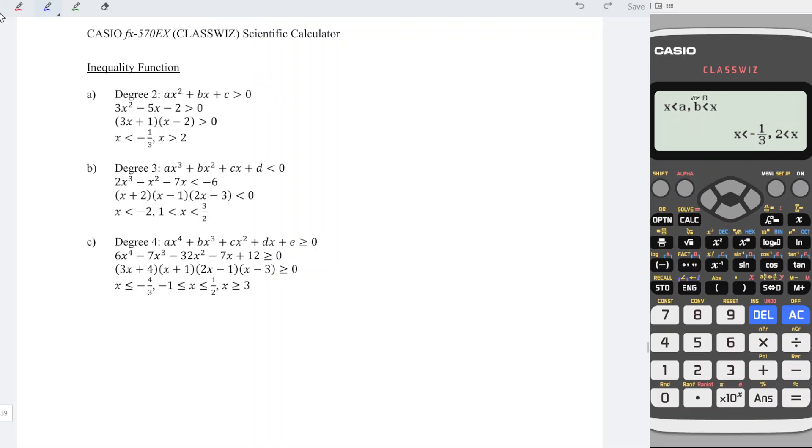For example, we have x less than negative 1/3. Replace less than with equal sign and we bring everything to the left.